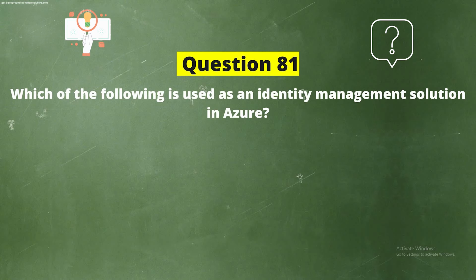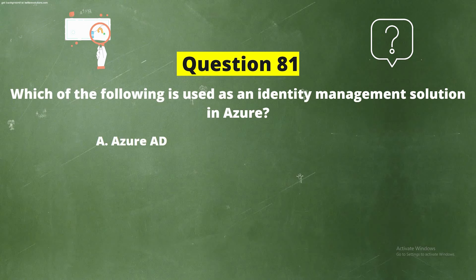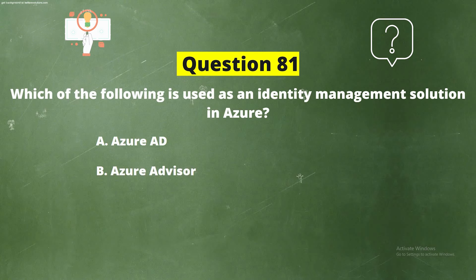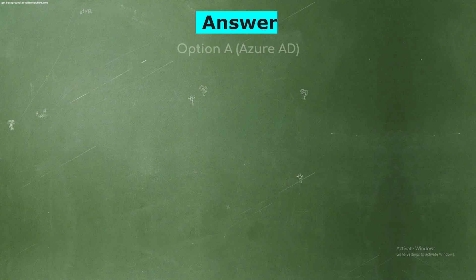Question 81: Which of the following is used as an identity management solution in Azure? Options: A) Azure AD, B) Azure Advisor, C) Azure Security Center, D) Azure Monitor. The correct answer is option A, Azure AD.